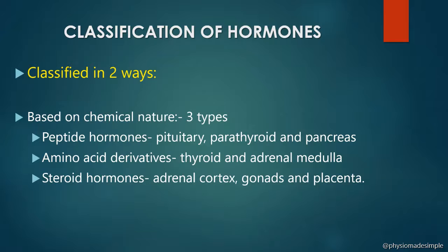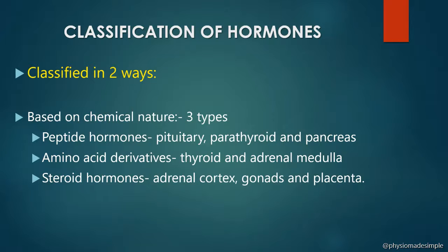Next come amino acid derivatives. These are developed from specific amino acids. Thyroid hormones and adrenal medullary hormones belong to this group. The adrenal medulla releases adrenaline and noradrenaline. Both thyroid hormones and adrenal medullary hormones are derived from the amino acid tyrosine.